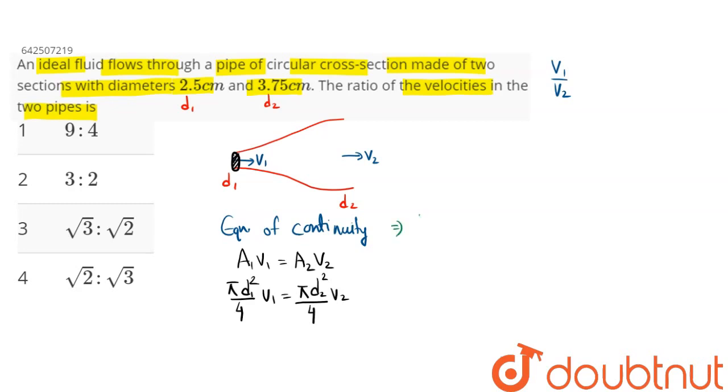Now from here we can say V1 by V2 comes to be - 4 cancels this 4, π cancels - becomes D2² by D1². Therefore V1 by V2 equals D2 divided by D1 whole square.